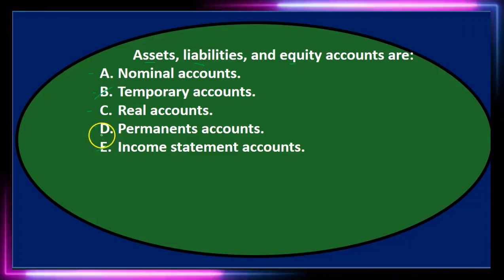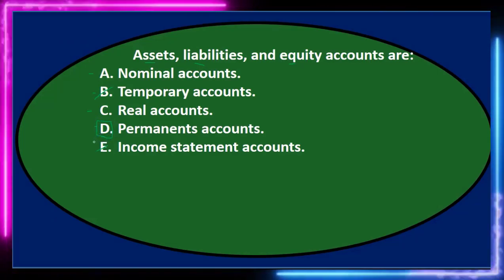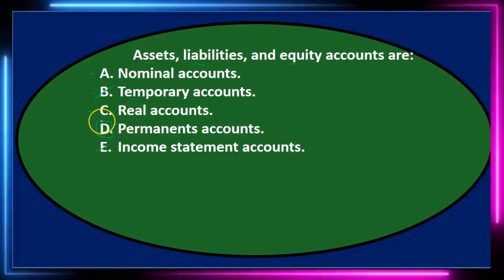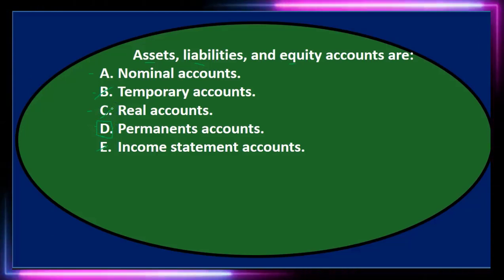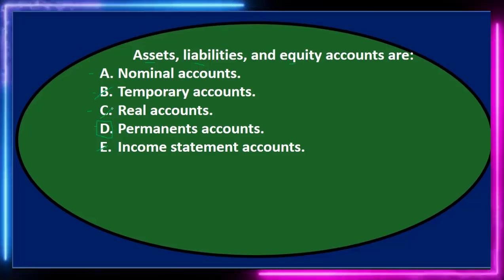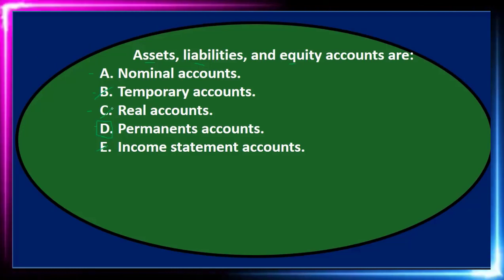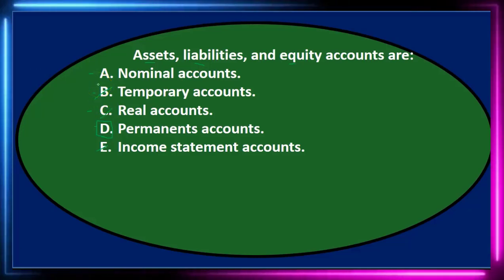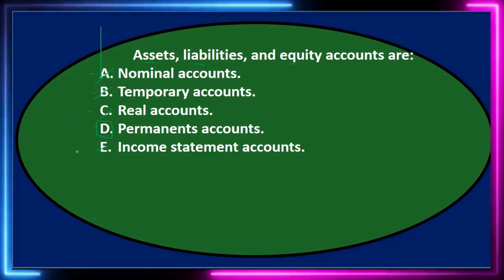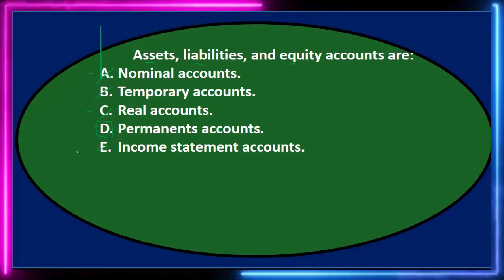D, permanent accounts, looks like the answer. We're studying the closing process, which deals with permanent accounts and temporary accounts. A says nominal accounts — that's another term for temporary accounts. So A, B, and E all refer to a type of temporary account, while D refers to permanent accounts, which is what assets, liabilities, and equity are. The answer is D: permanent accounts.